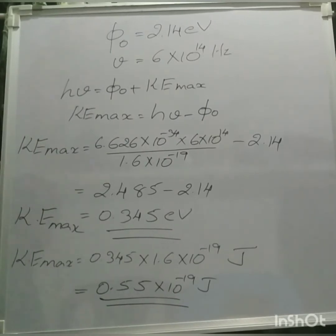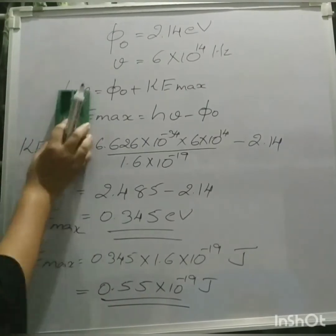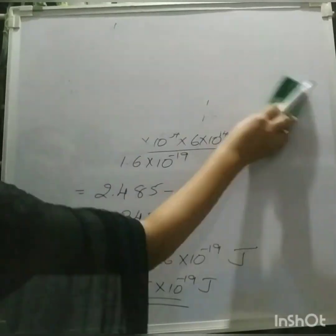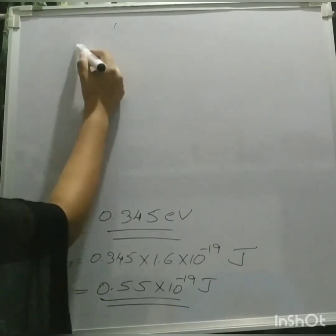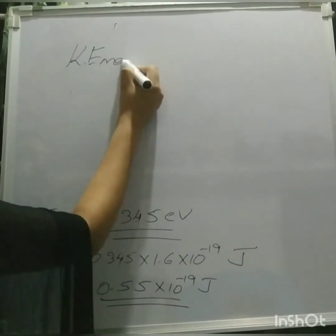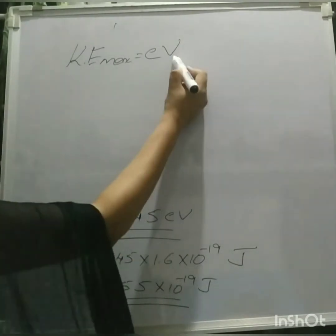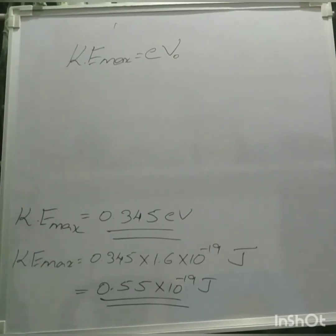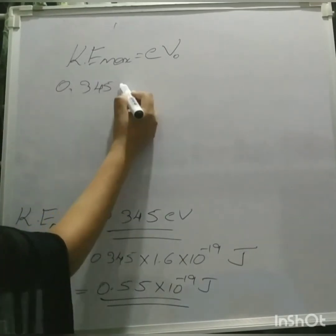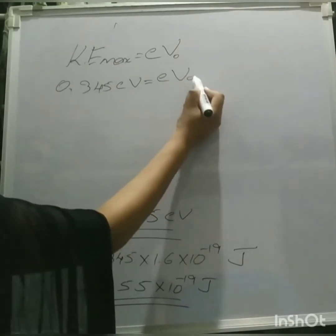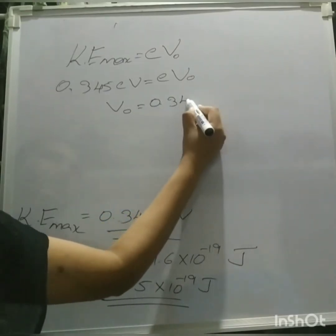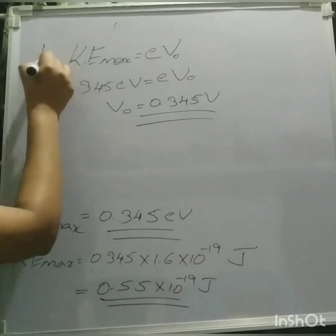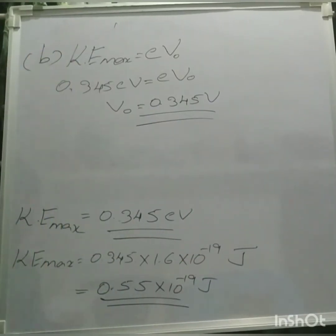Now we need to find the stopping potential. In photoelectric effect, kinetic energy maximum is equal to eV₀. Here kinetic energy is 0.345 electron volt, so 0.345 electron volt is equal to eV₀. From this equation, V₀ is equal to 0.345 volt. So now we got the stopping potential also: 0.345 volt.